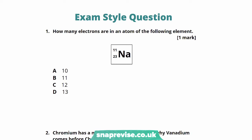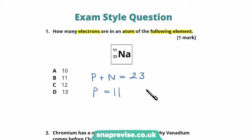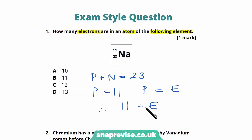Question one asks us how many electrons there are in an atom of the following element — and we can see we have sodium. We have a mass number of 23 and an atomic number of 11. Our mass number of 23 is the number of protons and neutrons. Our atomic number of 11 equals the number of protons, so there are 11 protons. We know that the number of protons equals the number of electrons, therefore we have 11 electrons, and the answer will be B.